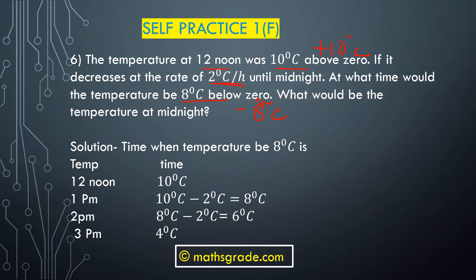At 12 noon the temperature is 10 degrees Celsius. It decreases at the rate of 2 degrees per hour. After one hour, it is 1 PM: 10 minus 2 equals 8 degrees Celsius. After another hour at 2 PM: 8 minus 2 equals 6 degrees Celsius. Then at 3 PM: 6 minus 2 equals 4 degrees Celsius.